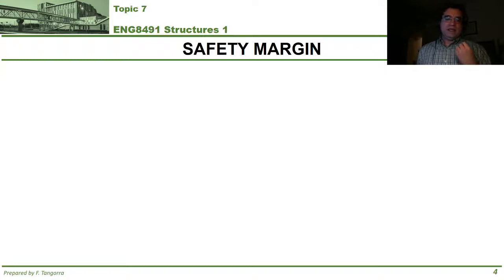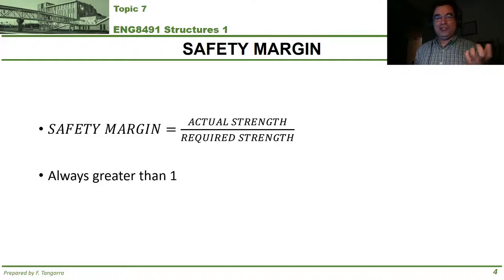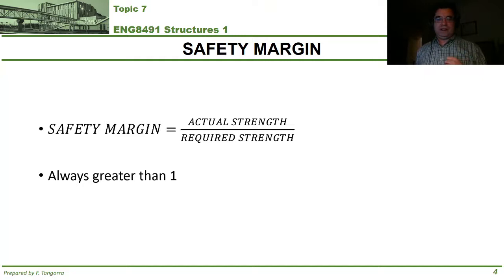Safety margins are defined as the ratio of the actual strength of the structure divided by the required strength to support those loads. According to this definition, the safety margin must be greater than one — you always want a structure that is actually stronger than the loads it needs to support, that it can support more than what's put on it.